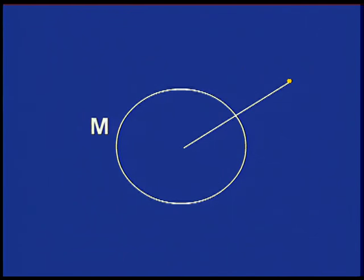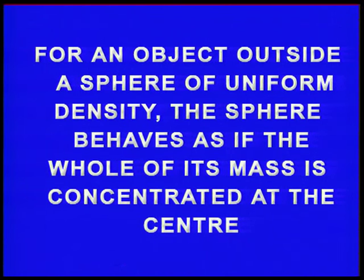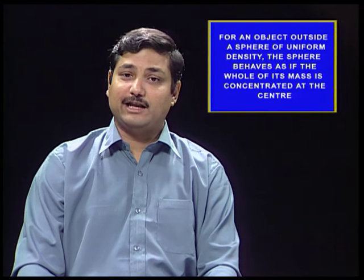You could ask why in our calculations we take the distance of object from the center of the earth. This is another contribution of Newton. He showed that for an object outside a sphere of uniform density, the sphere behaves as if the whole of its mass is concentrated at the center.